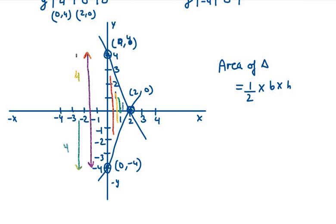So half into 8 into height. The height of the triangle here is 2 only. So 2 and 2 gets cancelled out. We are left with 8 square units. So the area of the triangle is 8 square units.